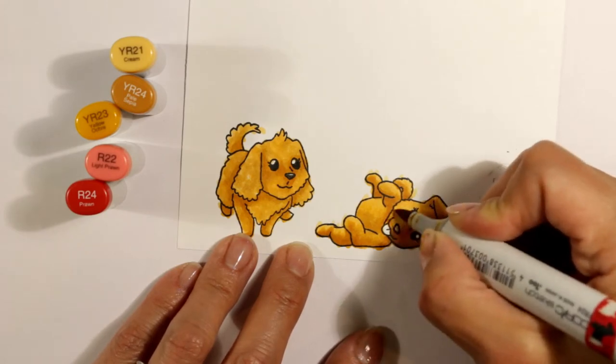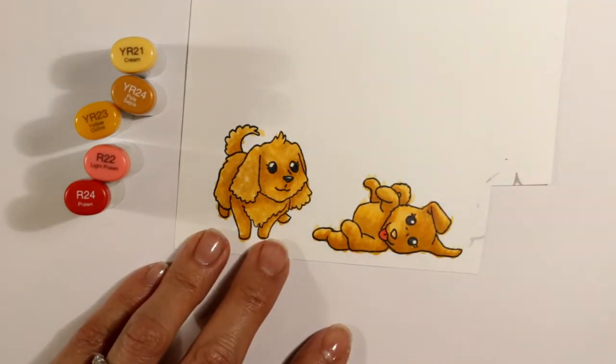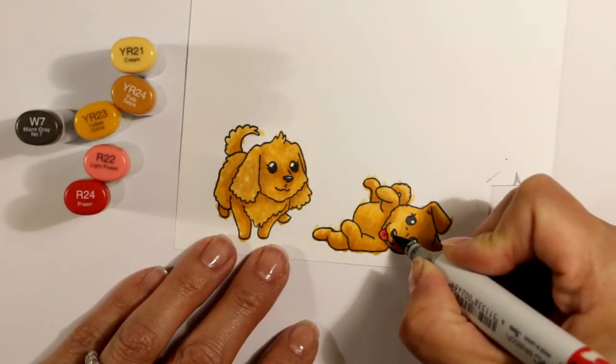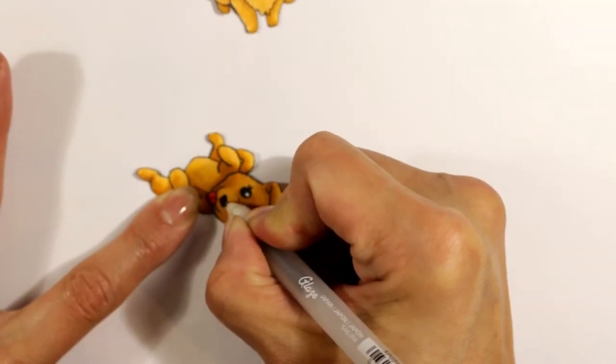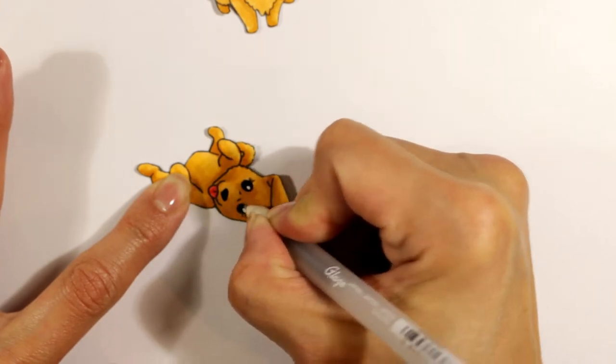I'm making sure that the inset areas between the eyes, the lower part underneath the muzzle, all get shadowed areas. The tongue is being colored with an R22 and an R24, and again the nose is with the W7. For the nose and the eyes I decided to use a black glaze pen to add a little bit of shine and a tiny bit of dimensionality.